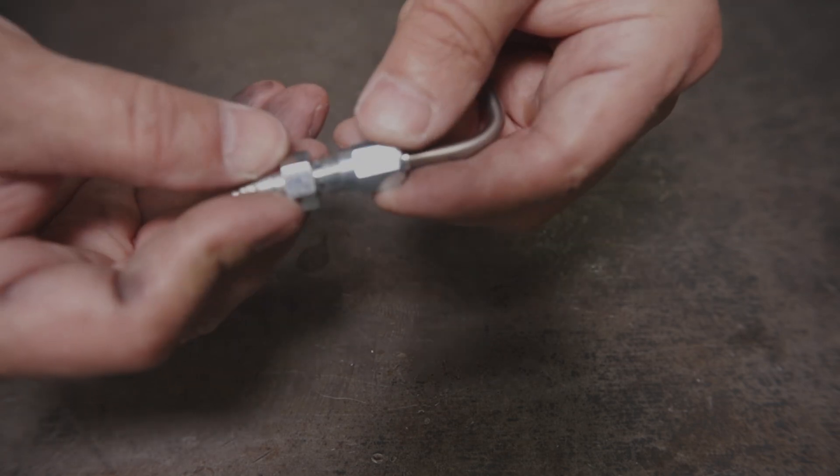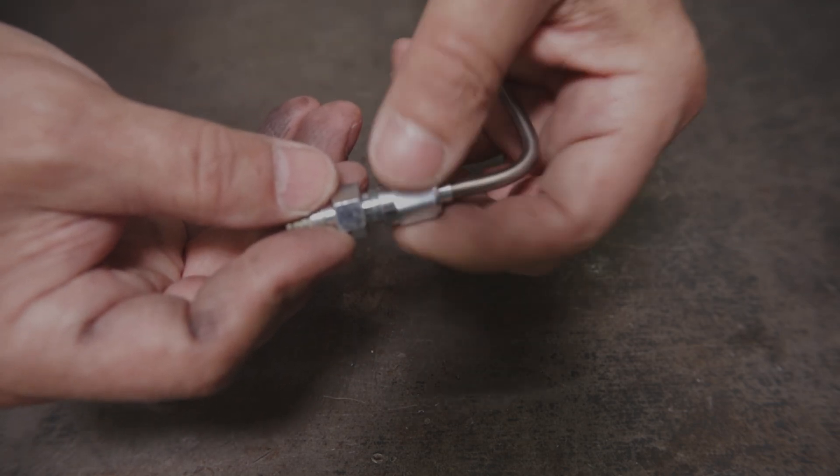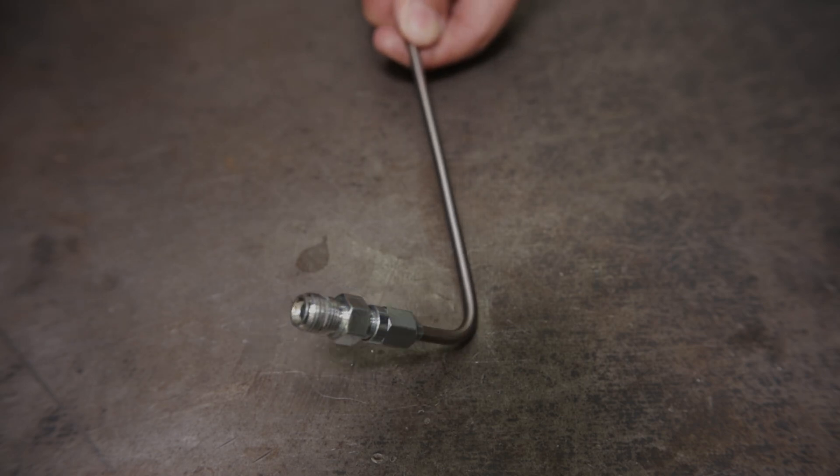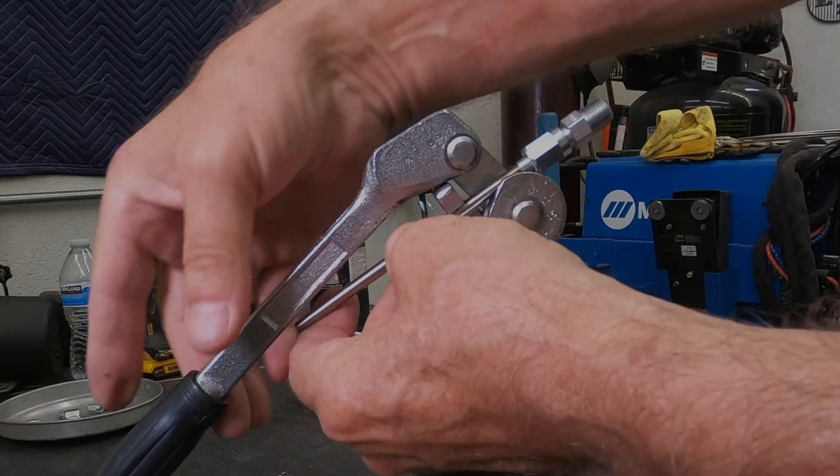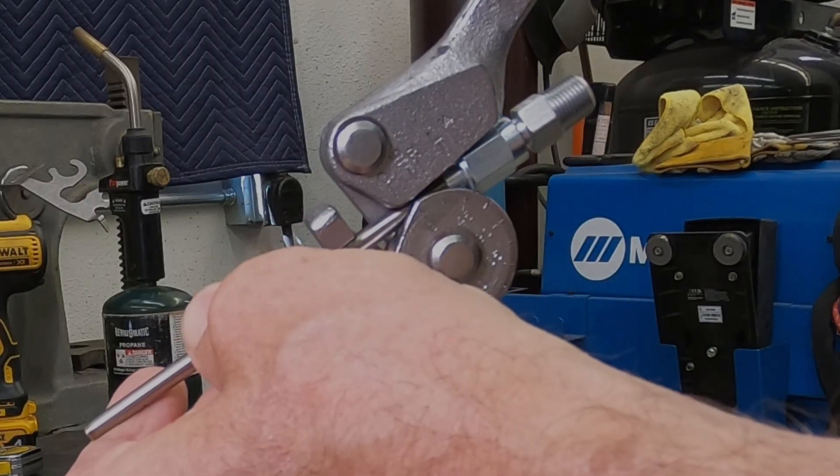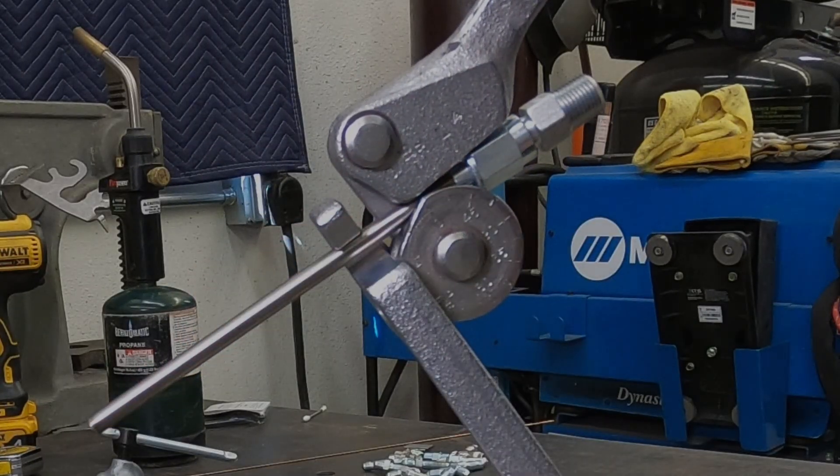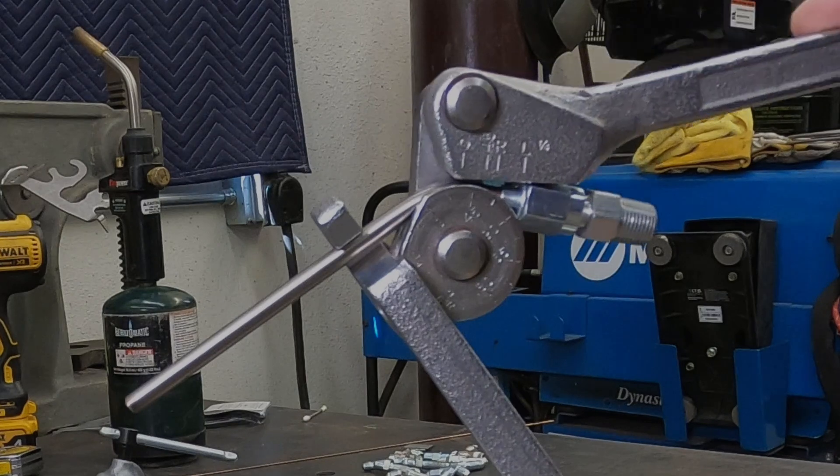As you can see, the tube nut, unlike the tube sleeve, will easily go around the tube radius after it's bent. If you need to start the radius closer to the fitting, assemble the tube to the fitting and put the assembly in the bender like this. It makes the whole thing about a quarter inch shorter.